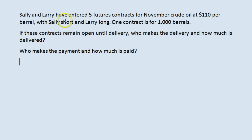The key here is to look at who is short and who is long, and remember what those terms mean as far as futures contracts are concerned. Larry being long means he is obligated to buy oil in November at $110 per barrel. Sally being short means she is obligated to sell oil in November at $110 per barrel.